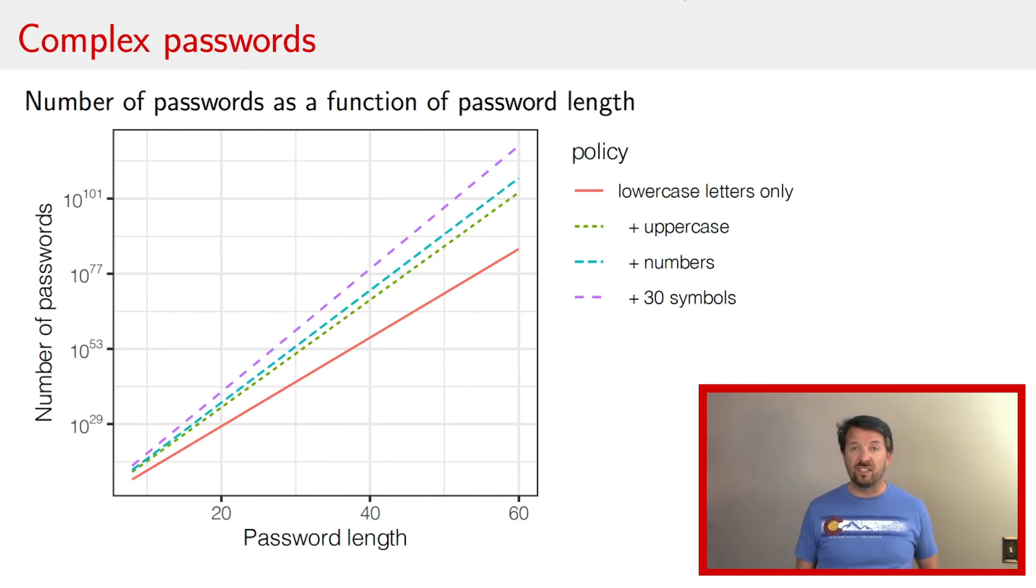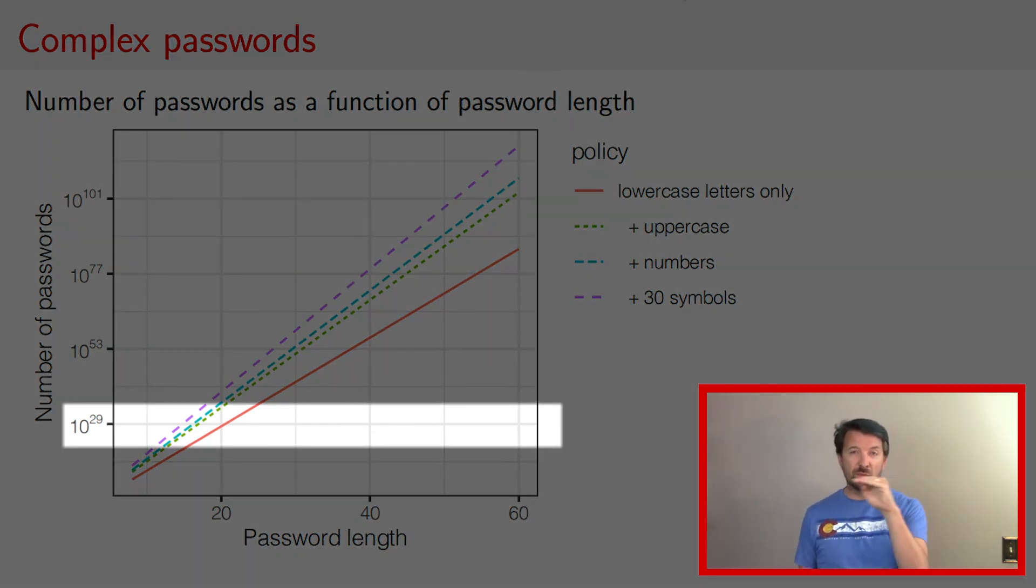And so what might be of interest here is you might have a design for a website, say, where you have, you want to have a certain number of passwords, that is a number, a password difficulty that say is about 10 to the 29th. And so what you can do is you can look at this graphic here, and you can look at that bottom sort of more solid gray line, and you can say, well, how many passwords are there that have that length, and you can make a decision about what policy you want in terms of what digits are allowed by looking at the lines as they cross that horizontal line. So for instance, if you only want to allow lowercase letters, then you need a password length of about 20. If you want to allow all lowercase uppercase numbers and symbols, then you only need a password that's about of length 15.